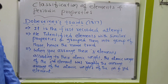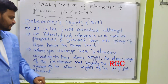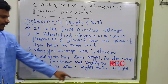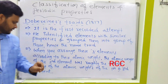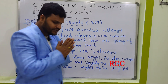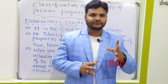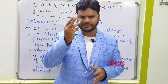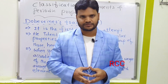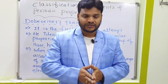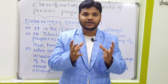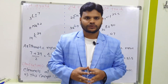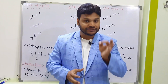When you arrange these three elements according to their atomic weight, the atomic weight of the second element was roughly the average of the atomic weights of the first and third elements. So the definition of Döbereiner's triad is: when elements are arranged by atomic weight, the atomic weight of the middle element is equal to the arithmetic mean of the first and third elements. Döbereiner's triad was the first recorded attempt.